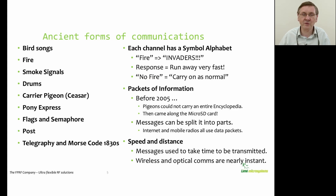There are a number of forms of ancient communication, the most obvious being birdsong, others including fire, smoke, drums, pigeons, ponies, flags, semaphores, lamps, posts, and telegraphy. Each communication method has a symbol alphabet. For example, in the simple case fire meant invaders, the response from the receiver was to run away very fast, and the case of no fire was to carry on life as normal.